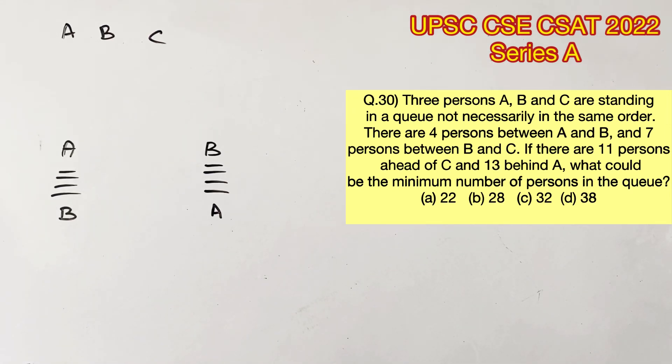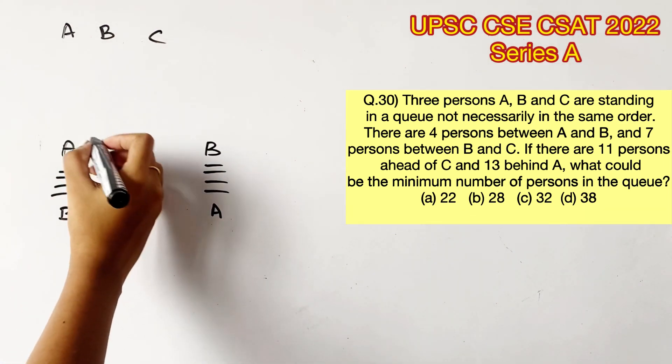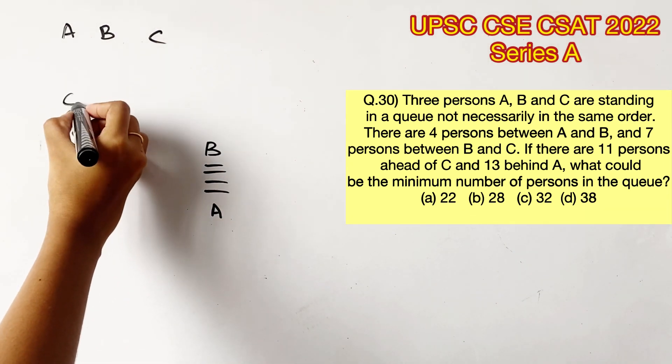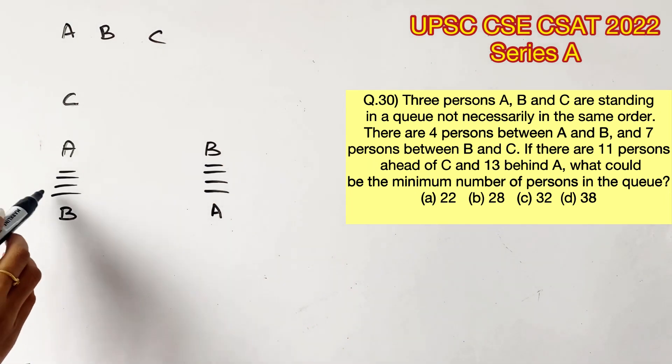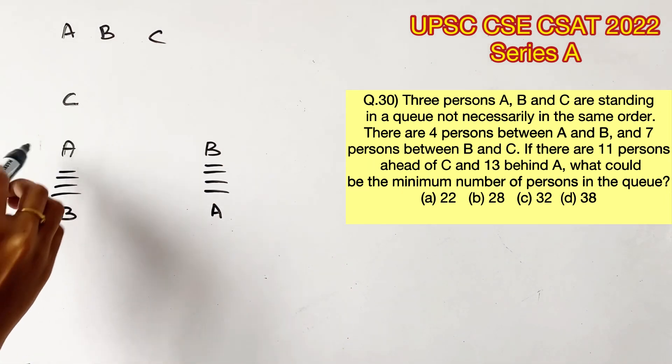The question says there are 7 persons between B and C. Now C can either be in the top or in the bottom. So first possibility is C can be at the top. So let's count 7 between B and C: 1, 2, 3, 4, 5, 6, 7.